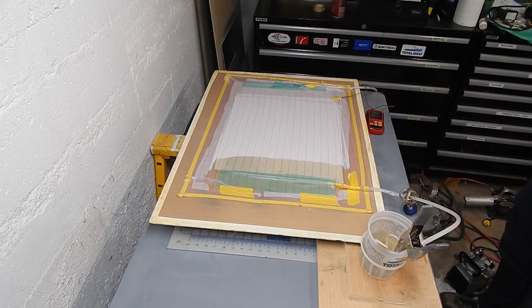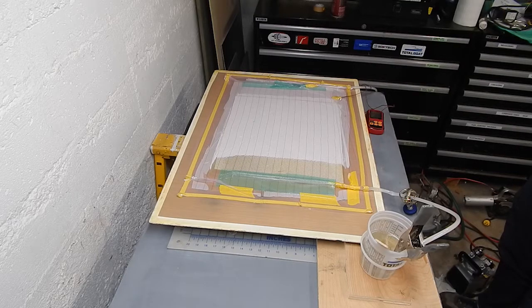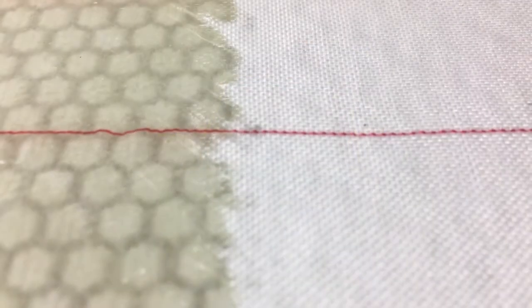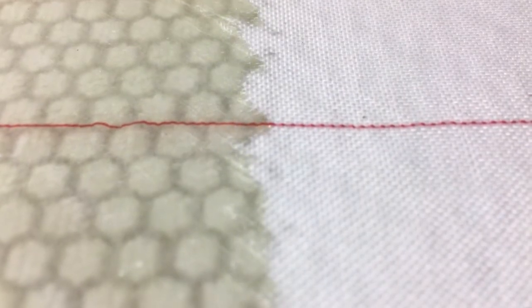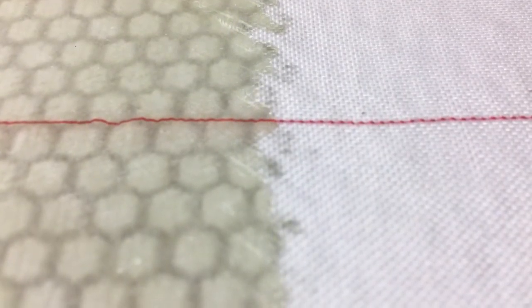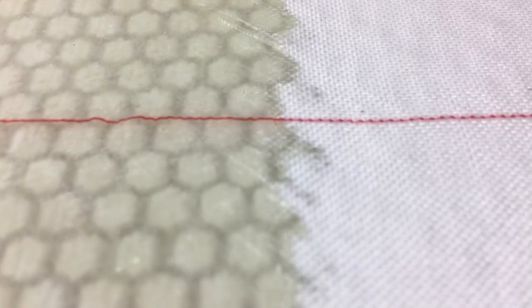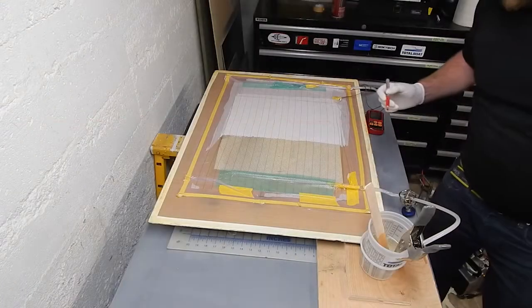There it is flowing through the SORIC. You can see the cells. The white bits are the micro balloons and the resin channels. You can see little bubbles flowing through the clear areas around them.